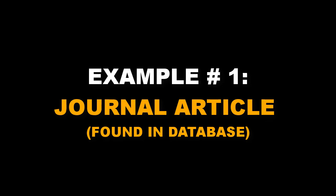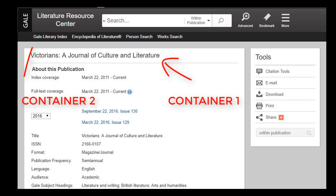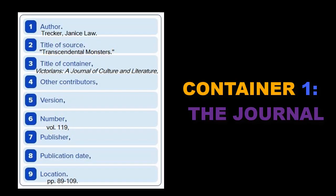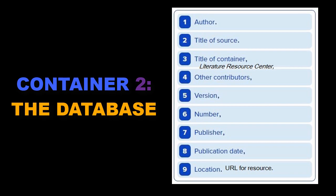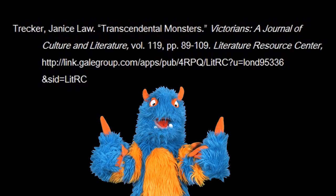Do you want to cite a journal article you found in a database? This is an example of a source that has two containers. The first container is the journal and the second is the database. Gather information about the source and record it in the template. The template will guide what punctuation you use. Note that the title of the smaller article source is in quotations, while the title of the larger container is in italics. Both titles are written in title case. Use the template to piece together the citation.